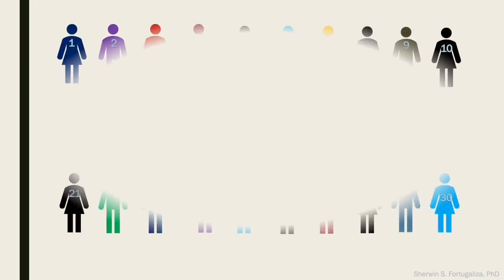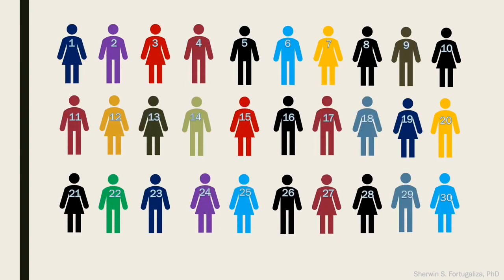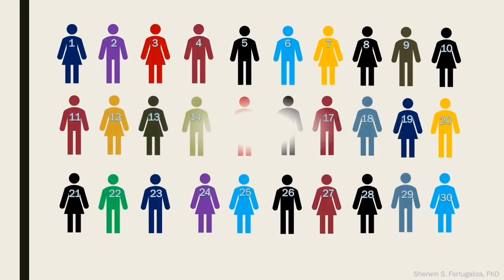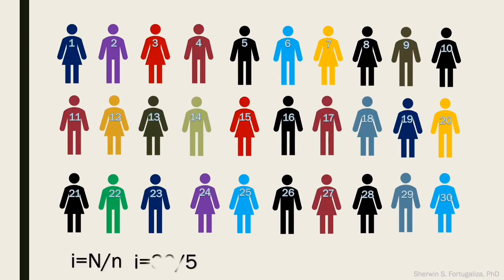Let us say we have a population numbered from 1 to 30 and we desire to have 5 samples from this population. With that, we can calculate our sampling interval. Using the formula, a population of 30 divided by 5 as our desired sample size gives us a sampling interval equal to 6.